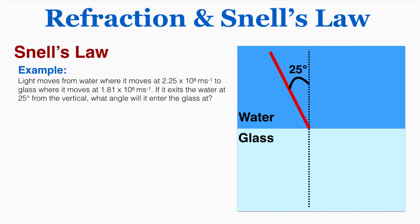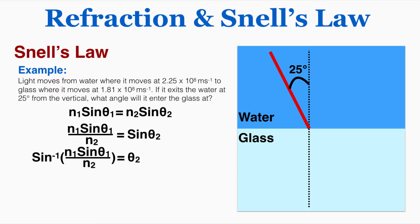This is an example problem using Snell's law. Light moves from water where it moves at 2.25 times 10 to the 8 meters per second to glass where it moves at 1.81 times 10 to the 8 meters per second. If it exits the water at 25 degrees from the vertical, what angle will it enter the glass at? So I know Snell's law applies here. Rearranging to solve for the angle, we're trying to find angle number 2. It's arbitrary which number angle you use for which medium as long as you keep it consistent. So I'm calling glass material 2 here. So solving for theta by itself gets me this equation.